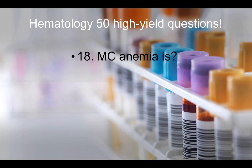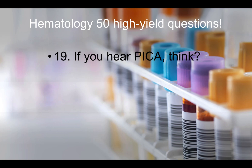Question number eighteen: The most common anemia is iron deficiency anemia. If you hear pica, think about iron deficiency anemia — that's the young kid eating paper or other non-food items. Ice is another example. If a patient in a stem is eating paper or ice, think pica, and that patient likely has iron deficiency.